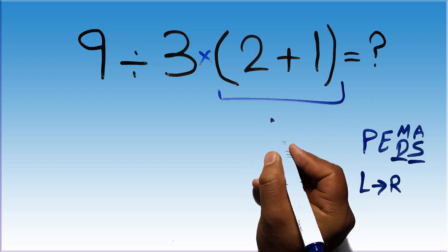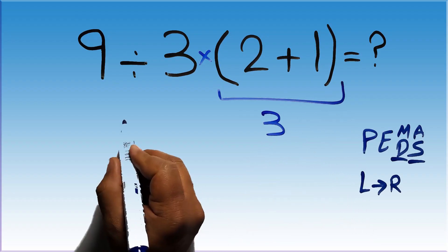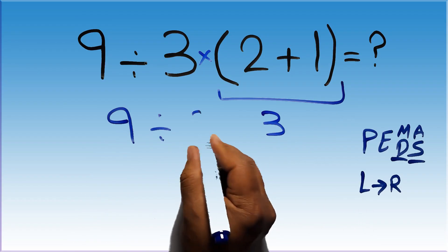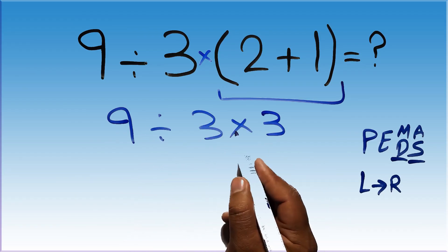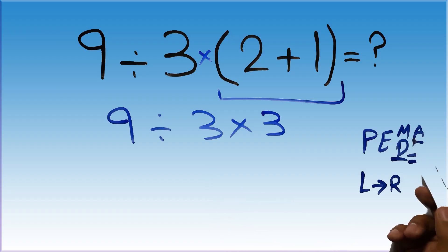2 plus 1 which equals 3. So 9 divided by 3 times 3. Now we have one division and one multiplication. As I said, multiplication and division have equal priority and we have to do from left to right, so here